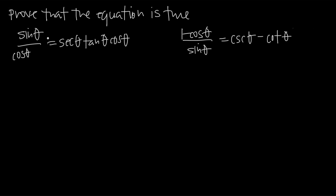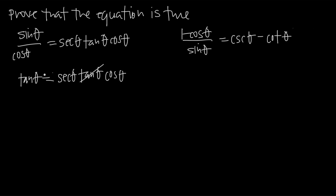Now all we're left with on the left-hand side is sine over cosine. We know that sine over cosine is the same thing as tangent. So we can replace the whole left-hand side with tangent of theta, and on the right we have secant times tangent times cosine. Now if we divide both sides by tangent, we remove the tangent function from the right, and on the left we have tangent theta divided by tangent theta, which of course is 1. So what we get is 1 equals secant theta times cosine theta.